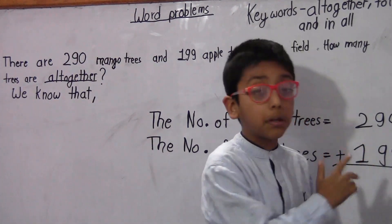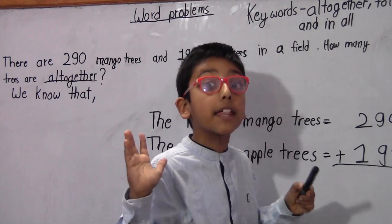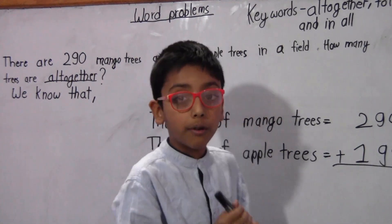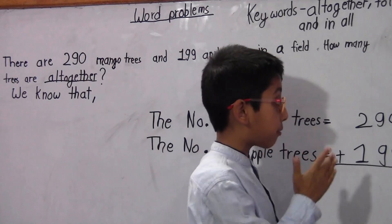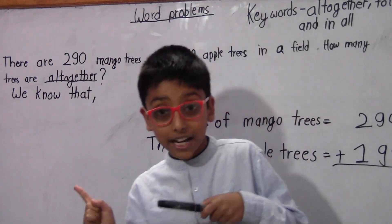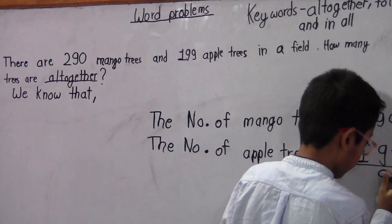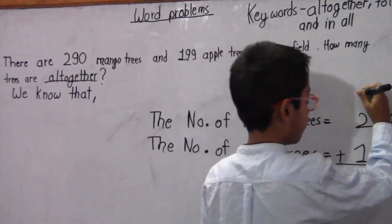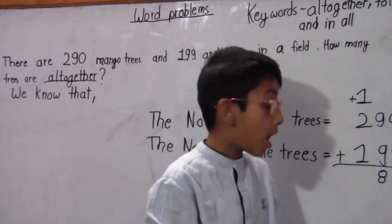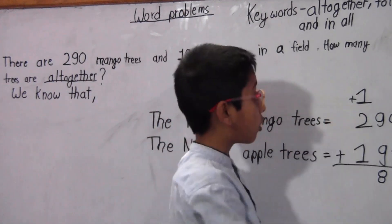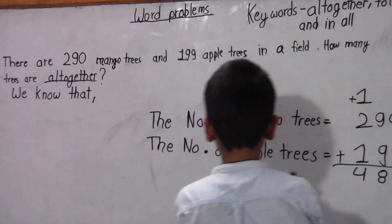What is 9 plus 0? 9 plus 0 equals 9 because there is nothing to add. And what is 9 plus 9? You can also use multiplication: 9 ones are 9, 9 twos are 18. So let's write 18, but we have to carry over — we write 8 here. What is 2 plus 1? 2 plus 1 is 3, but there is a carry over, so we write 4.